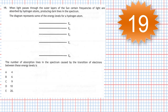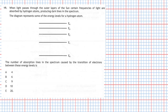Question 19 from section 1 of the 2019 Higher Physics examination. When light passes through the outer layers of the sun, certain frequencies of light are absorbed by the hydrogen atoms, producing dark lines in the spectrum. The diagram represents some of the energy levels for a hydrogen atom. The number of absorption lines caused by transitions of electrons between these energy levels is — we have five choices. Let's be systematic: starting with electrons on the ground energy level E0, they could be promoted to E4, E3, E2, or E1 — that's four possible lines.